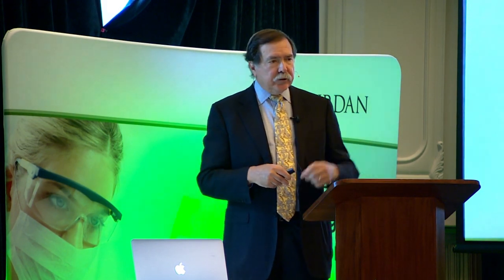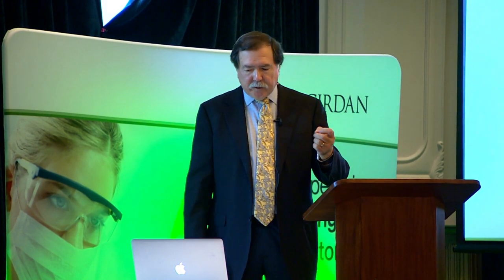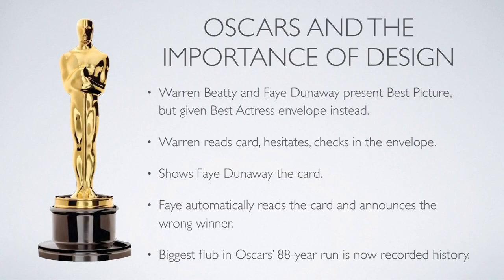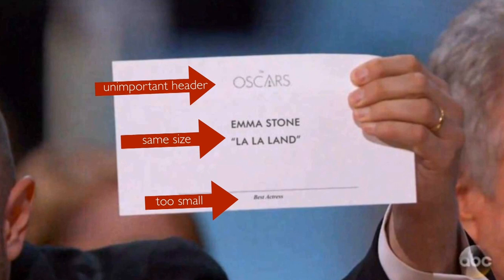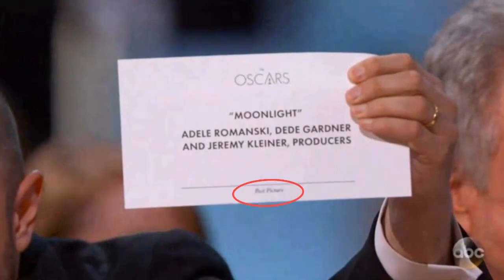Here's a story that illustrates why typography and layout matter so much. Two years ago at the Academy Awards, Warren Beatty and Faye Dunaway came up to announce Best Picture. Warren hesitated when he read the card — it didn't seem right. Faye Dunaway grabbed it and announced La La Land as the winner, which was wrong. The problem was entirely typographic: the largest header was not the most important information.